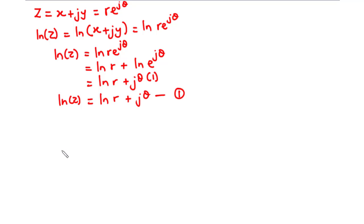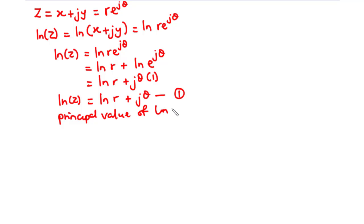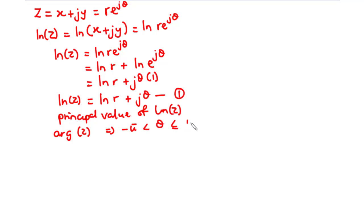Let's call this Equation 1. Here, r is the modulus and theta is the argument. This is called the principal value of ln z. The principal value of ln z is obtained by restricting the argument of z to the range negative pi less than theta less than or equal to pi.